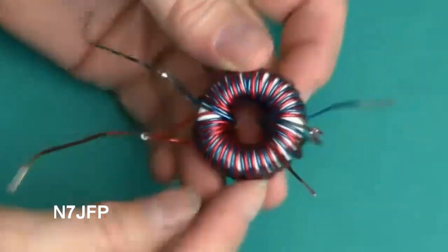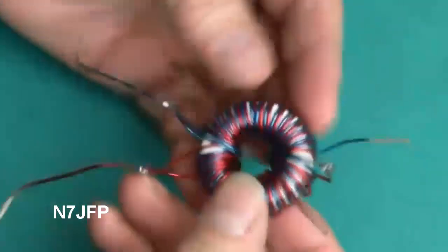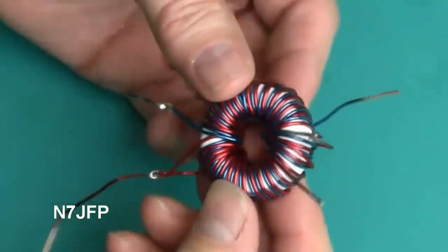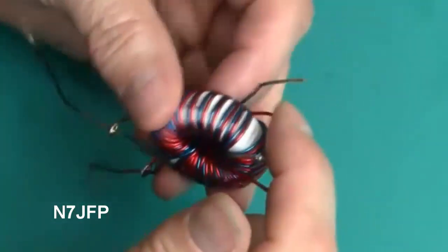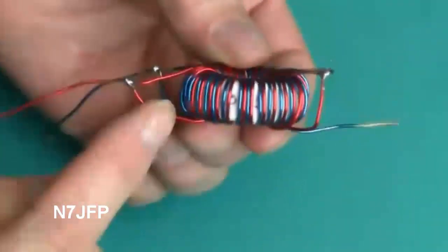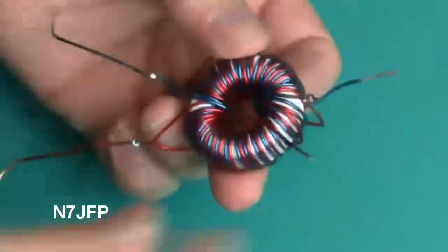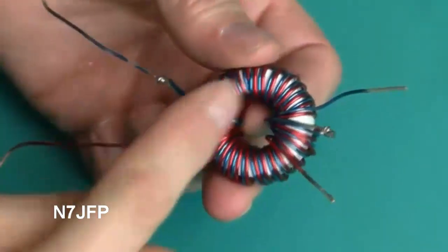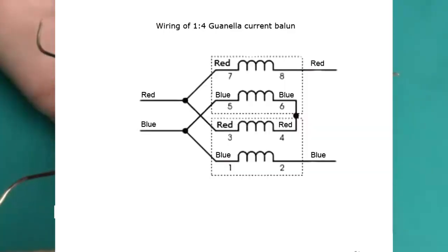Here's the finished product. This is the output. We've tied the two, the red and the blue together on the input. Two reds and the two blues are tied together. We've got 15 turns on both sides. So now we just need to check it, see what the SWR would be on it.